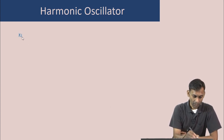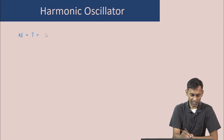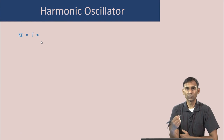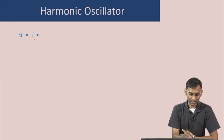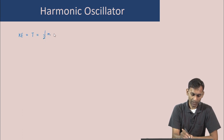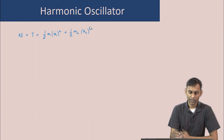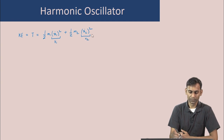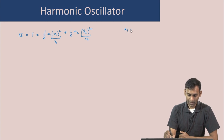The kinetic energy of the two-mass system, which I will denote as T, is first written as the classical expression: T = (1/2)·m1·ẋ1² + (1/2)·m2·ẋ2², where ẋ1 and ẋ2 are the velocities of the two masses. We have x1 = X − m2/(m1 + m2)·x, so ẋ1 = Ẋ − m2/(m1 + m2)·ẋ.